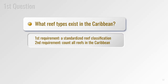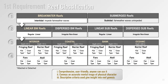Starting with the first question — what reef types exist in the Caribbean? To answer this we need two things: first, a reef classification system that standardizes each reef category so it's easy to recognize; and second, we need to count and classify all reefs in the Caribbean using this scheme. For the classification, there are two main objectives: to design a classification that conveys an accurate mental image of the physical character of each reef type, and to impart order in natural systems that are almost always dominated by continuous variables — in other words, erecting artificial boundaries where none really exist.